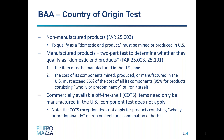For commercially available off-the-shelf (COTS) items, the component test doesn't apply. COTS items need only be manufactured in the U.S. The FAR defines COTS items as any item of supply that is a commercial item sold in substantial quantities in the commercial marketplace and offered to the government without modification in the same form in which it's sold. An important exception to the COTS exception is that for products consisting wholly or predominantly of iron and steel, the COTS exception doesn't apply.